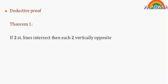Theorem: If two straight lines intersect, then each two vertically opposite angles are equal in measure.